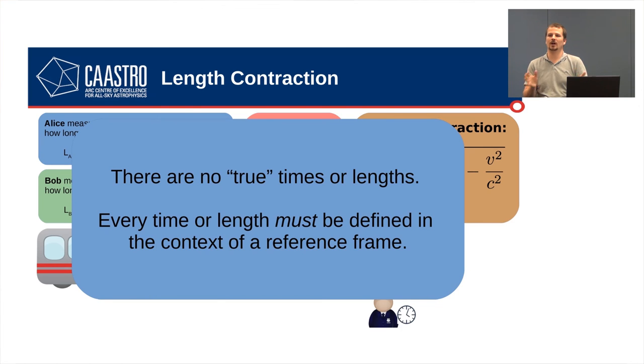So, in the end, there are no true times or lengths. That's the takeaway thing. Every time or length must be defined in the context of a reference frame. They don't exist outside that.